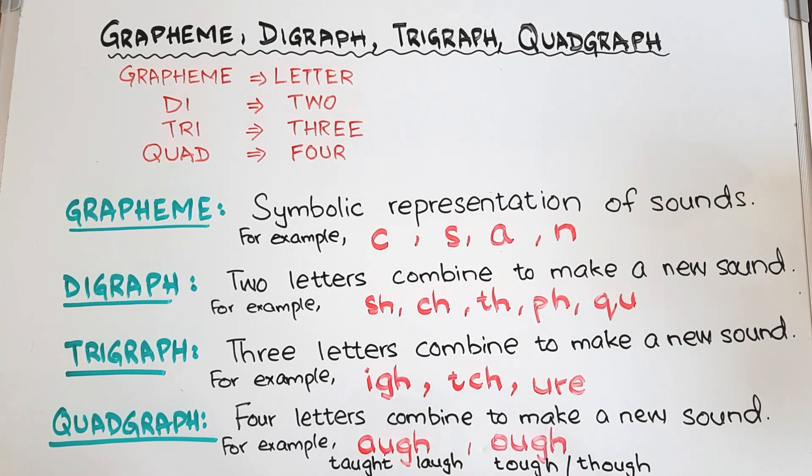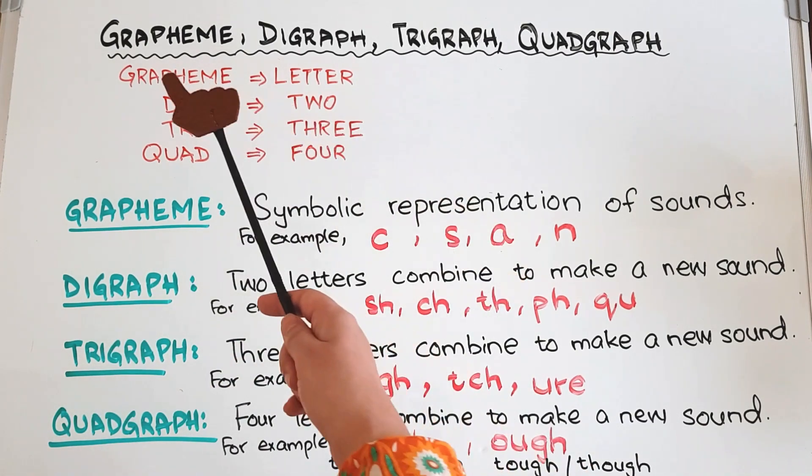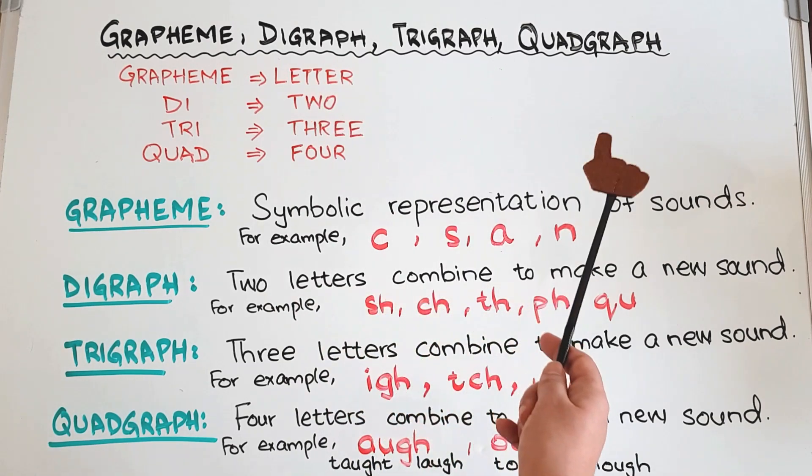So this was the simplest description of grapheme, digraph, trigraph, and quadgraphs. I hope you have got it.